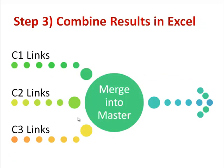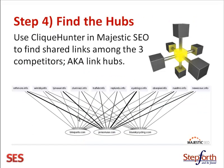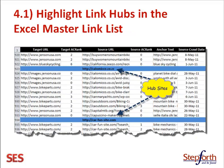Once you've done this, take all three reports and merge them into a master Excel sheet. In step four, we get to use ClickHunter to find hub sites. Hub sites are any website that happens to be linking to all three of the competitors. If they are, there's a good chance those sites have a lot of relevance and are ones you should aim for — we call these link hubs. Take that data, the links that are hub sites, and import them into your Excel master list.